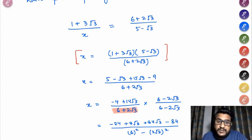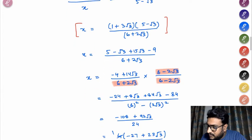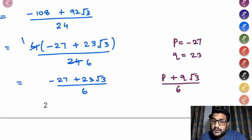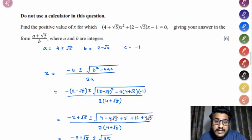Now conjugate of 6 plus 2√3 would be 6 minus 2√3. Now multiplying this by 6 minus 2√3 and if you simplify, you will get something -27 plus 23√3 by 6. Now comparing this with P plus Q√3 by 6, because you need to give your answer in the form of P plus Q√3 by 6, so on comparison we can say the value of P is -27 and value of Q is 23. Clear? Let's move on to the next question.